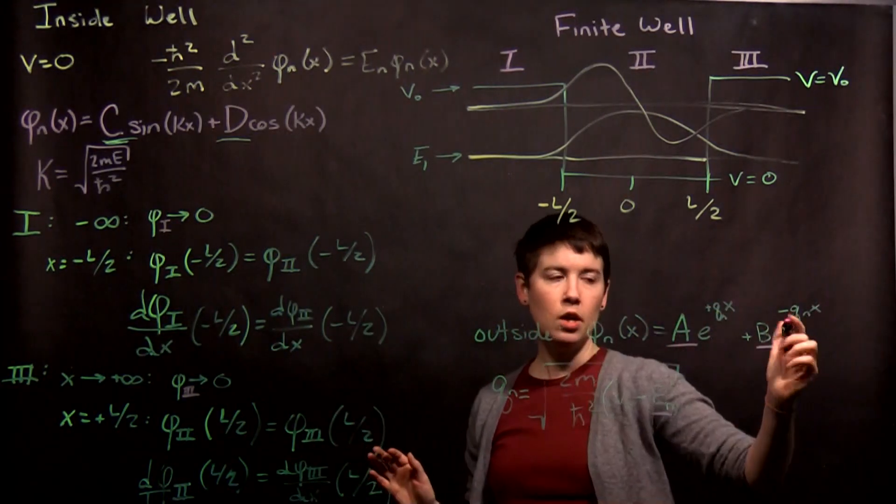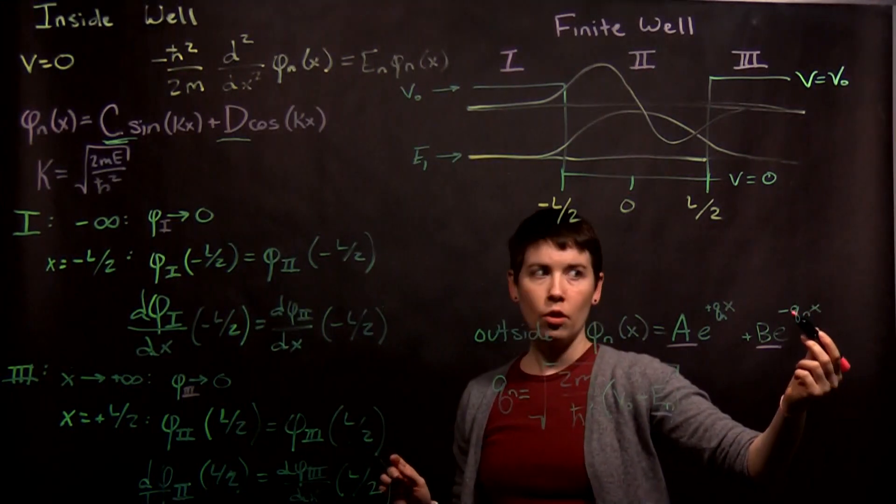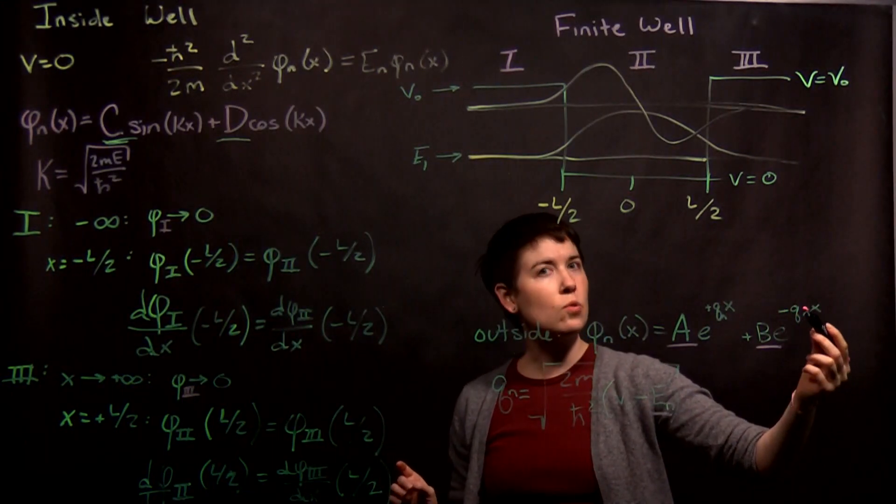Now, we go to this one. This is e to the negative q, x. So, there's a minus sign here. As x goes to negative infinity, this exponent goes to positive infinity.